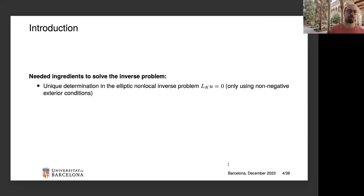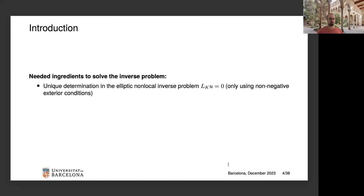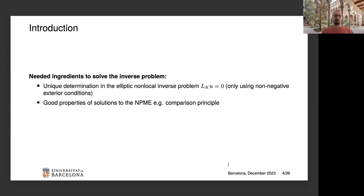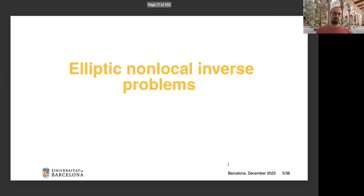The methods we use later are also motivated by their work. To solve our inverse problem, we need a unique determination result for the elliptic non-local inverse problem L_K u = 0 from the associated DN map, but using only non-negative exterior conditions, since in the non-local porous medium equation we assume this from the beginning. Additionally, we need good properties of solutions, in particular a comparison principle.